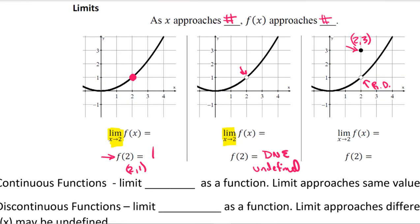When you look at the limit, I come in from the left and I come in from the right, and both of those meet at that x value of 2. The height of that spot is 1. Notice that since the limit and the function are both defined and both have the same value, then that function would be what we say continuous.